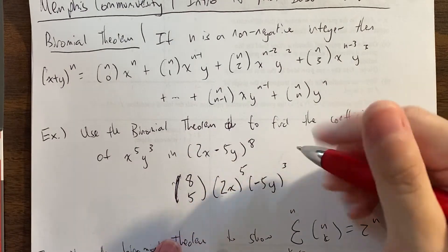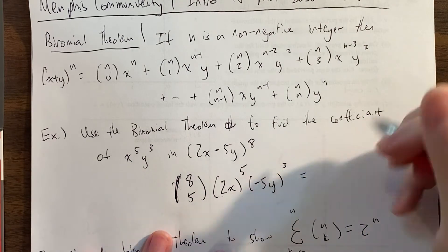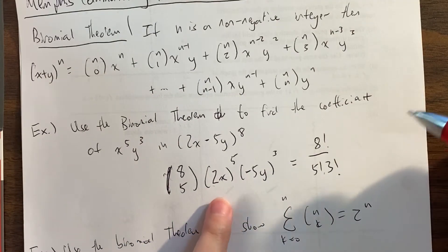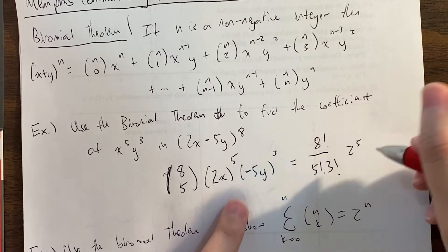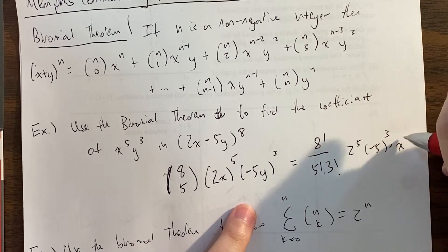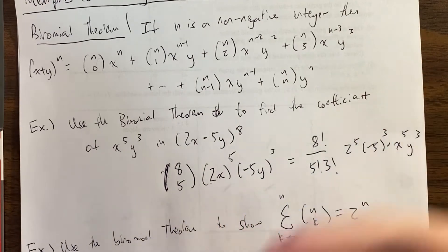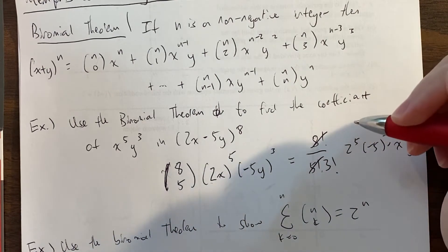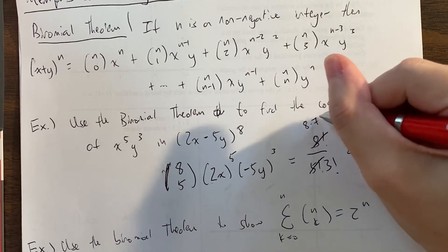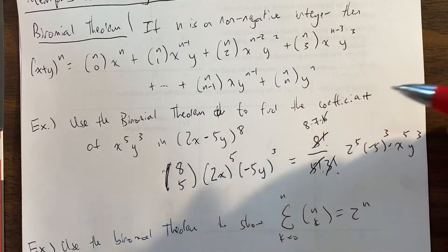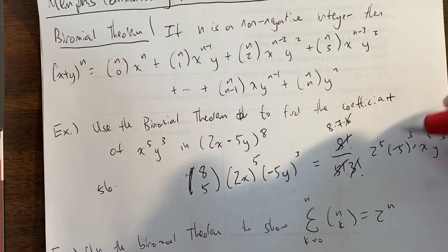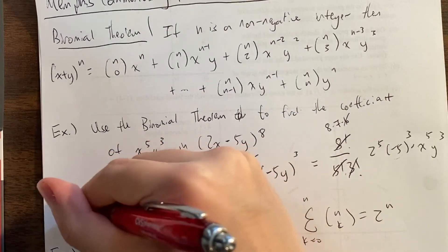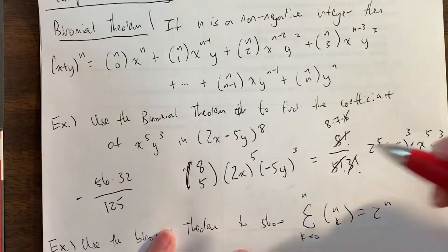Let's simplify a little bit. 8 choose 5 is 8 factorial over 5 factorial times 3 factorial — that's why 8 choose 5 and 8 choose 3 are the same thing. Then we have 2 to the 5th and negative 5 to the 3rd. Now, 8 factorial divided by 5 factorial gives 8 times 7 times 6, and the 6 and the 3 factorial cancel, leaving 8 times 7, which is 56. 2 to the 5th is 32. And 5 cubed is 125, so we get negative 125. So 56 times 32 times negative 125 is our coefficient.